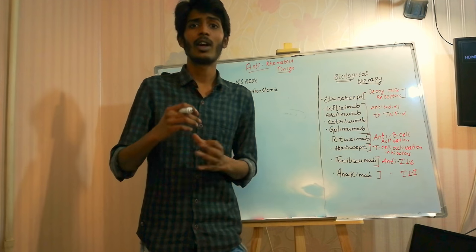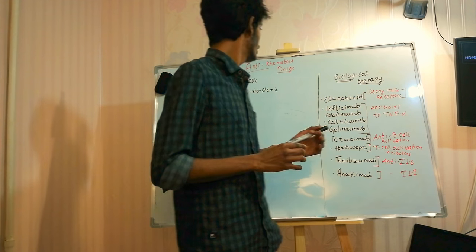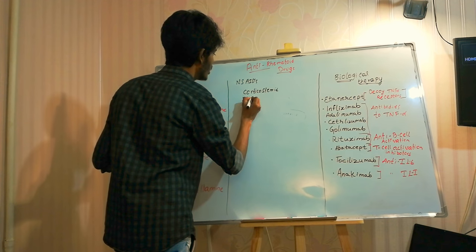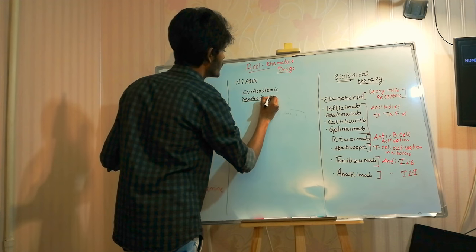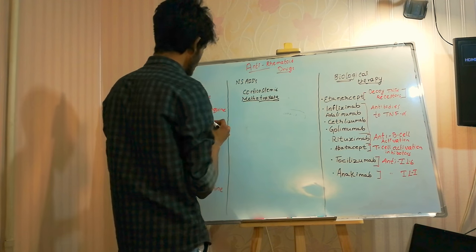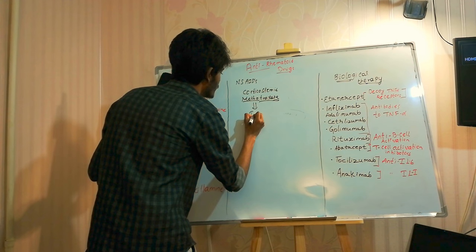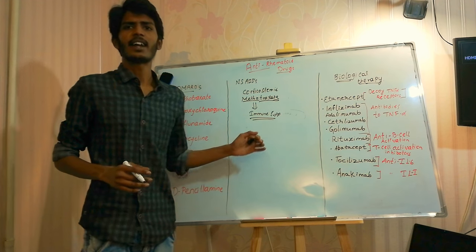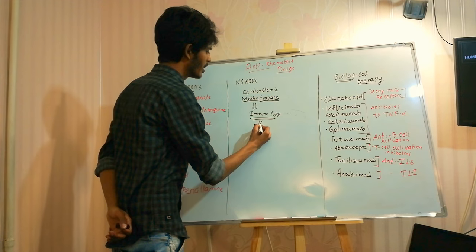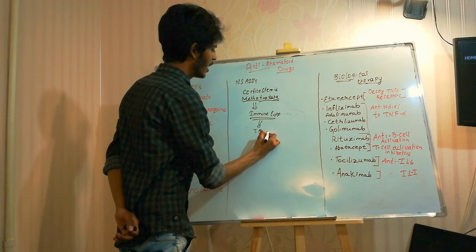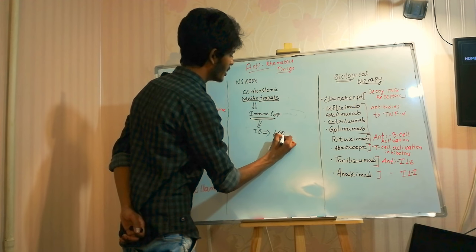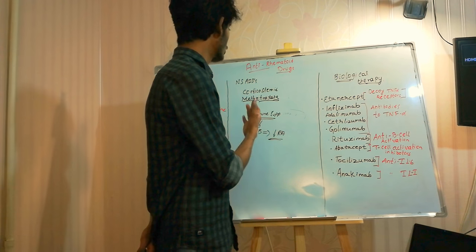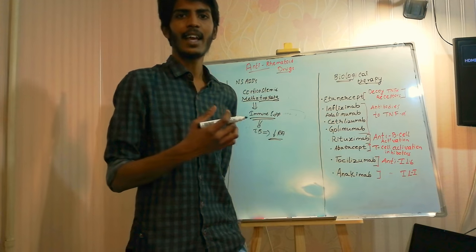First, let's discuss methotrexate. Methotrexate causes immune suppression, which leads to decreased production of T cells and B cells, and that is how it decreases the symptoms of rheumatoid arthritis. Methotrexate is actually an anti-cancerous drug, but we use it in rheumatoid arthritis at very low doses.